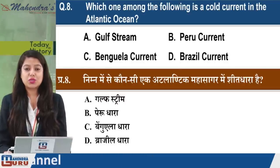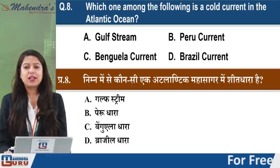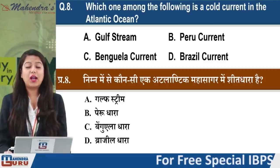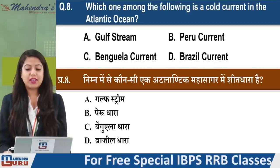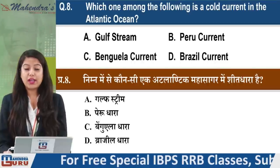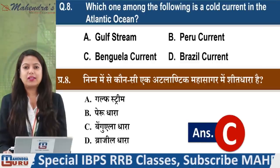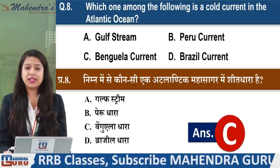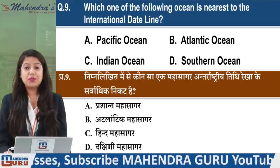Next question: Which among the following is the cold current in the Atlantic Ocean? Options: Gulf Stream, Peru Stream/Peru Current, Benguela Current, or Brazil Current. The answer for the cold current in the Atlantic Ocean is option C - Benguela Current.